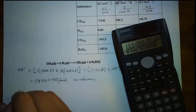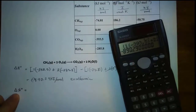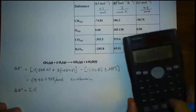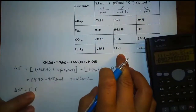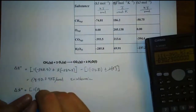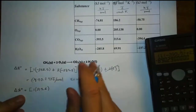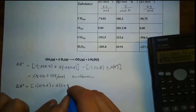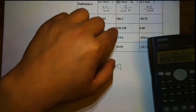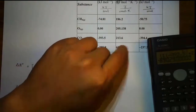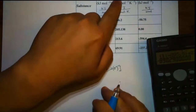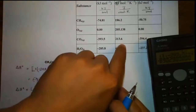Next, let's solve for delta S, the standard entropy. Same thing: product minus reactant. One mole of carbon dioxide — the value for delta S formation of CO2 is 213.6. And two moles of water — the value is 69.91. If you haven't noticed, all values for delta S formation are positive, because the only perfect condition of zero disorder is at zero Kelvin. Here we're talking about standard, which is 25 degrees Celsius, so all your delta S will be positive.